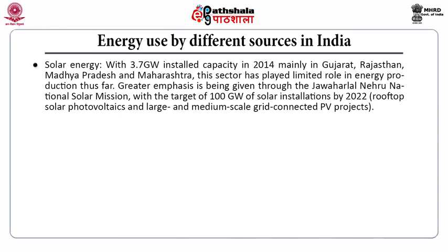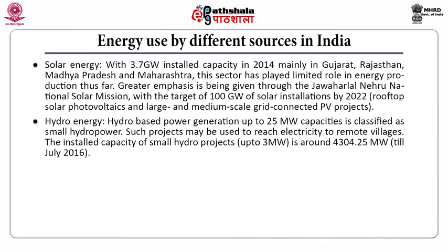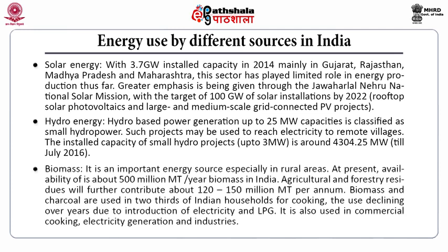Hydro-based power generation up to 25 megawatt capacity is classified as small hydropower. Such projects may be used to bring electricity to remote villages. The installed capacity of small hydro projects up to 3 megawatt is around 4,304 megawatt till July 2016. Biomass is an important energy source, especially in rural areas. At present, availability is 500 million metric ton per year in India. Agriculture and forestry residue will further contribute about 120 to 150 million metric ton per annum. Biomass and charcoal are used in two-thirds of Indian households for cooking, but use has declined over the years due to introduction of electricity and LPG. It is also used in commercial cooking, electricity generation and in industries.